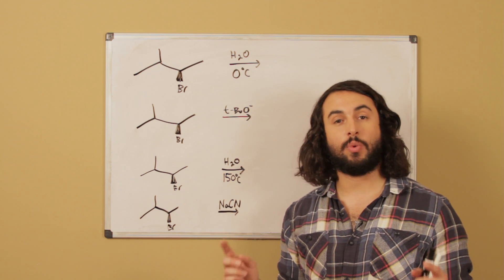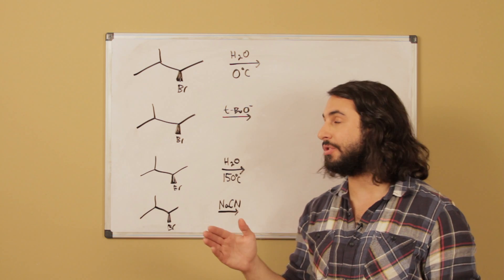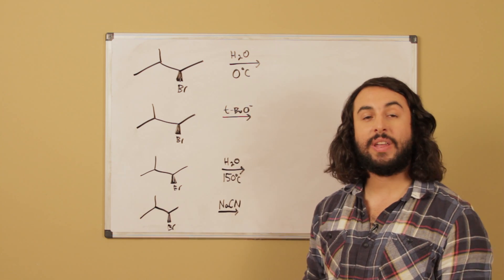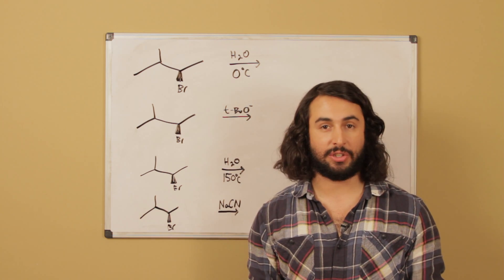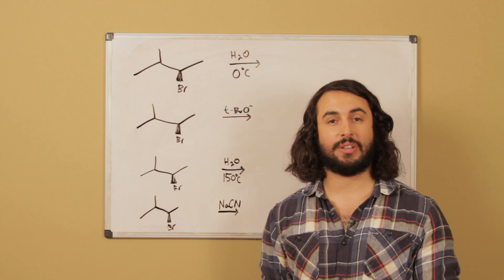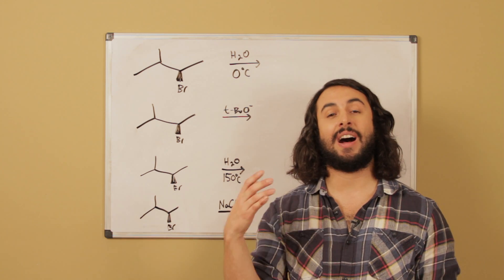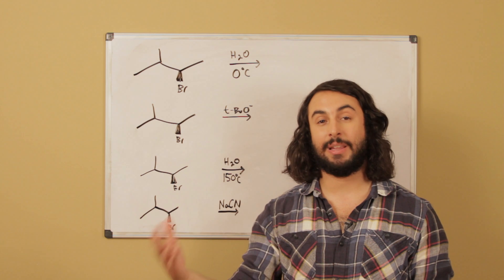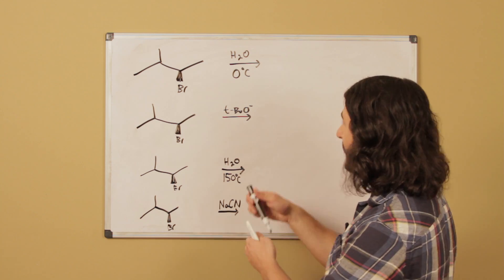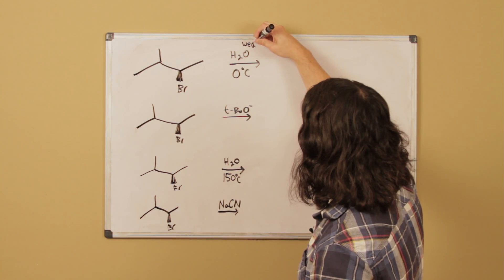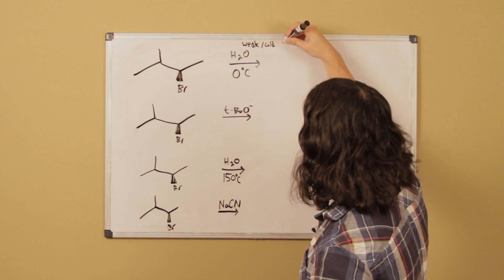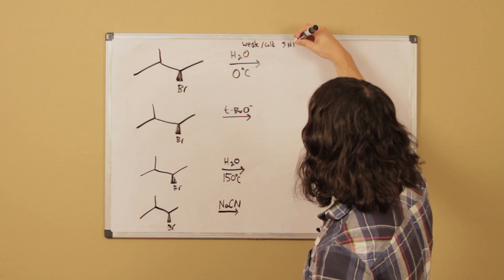Now in order to choose which one is going to occur, a hint can usually be the temperature. And we know that because of the Gibbs free energy equation that a colder temperature is going to favor substitution whereas a hotter temperature is going to favor elimination. And so because this is weak and cold we're going to go SN1 with this one.